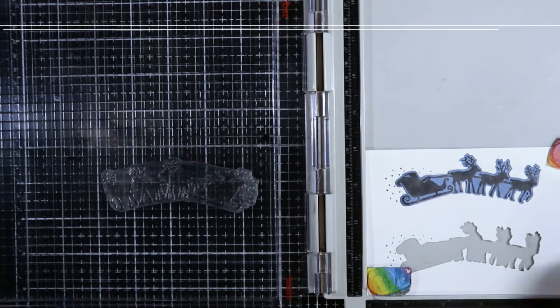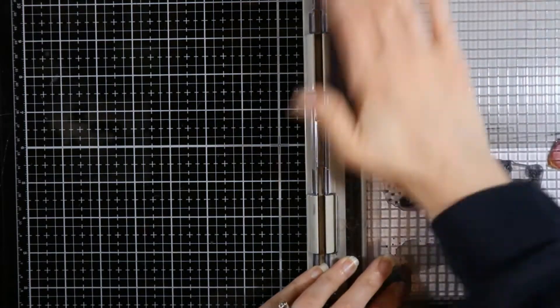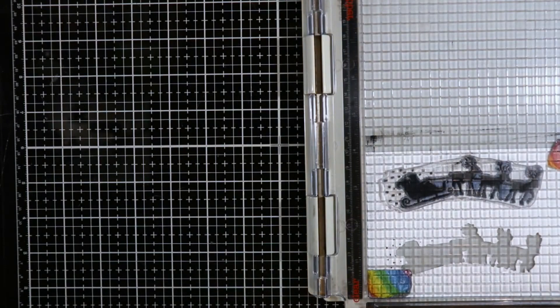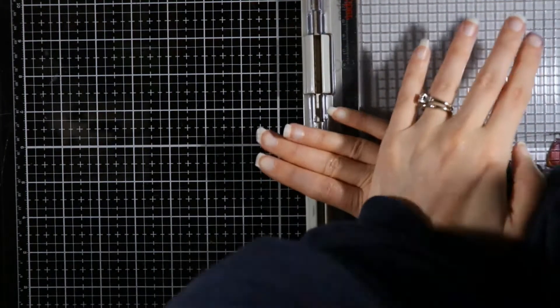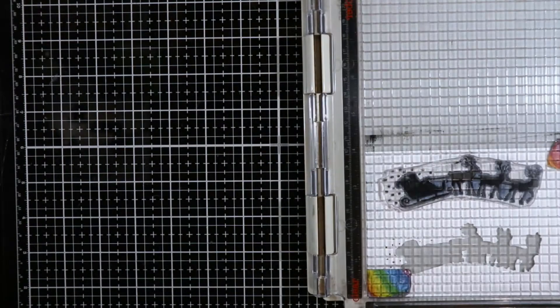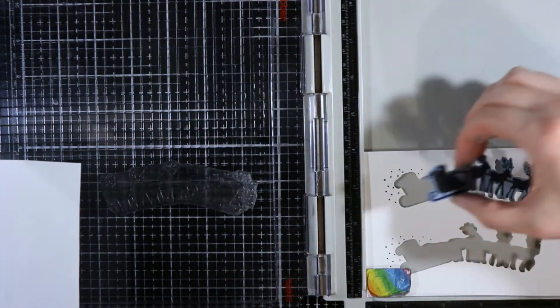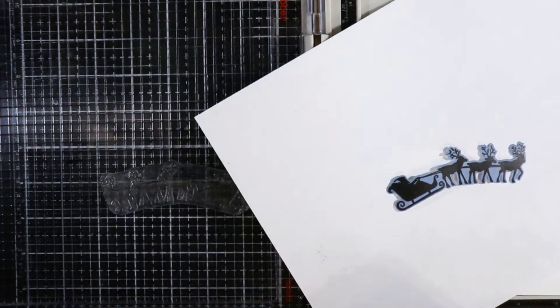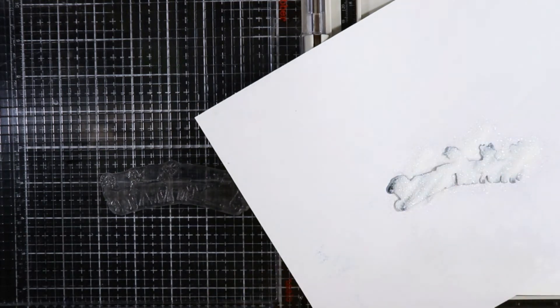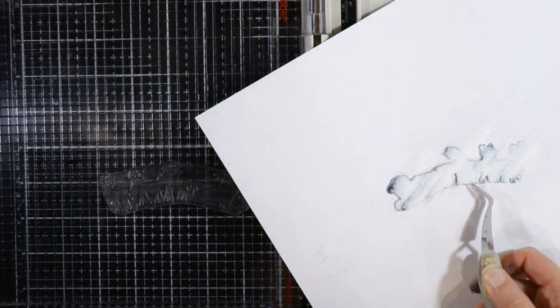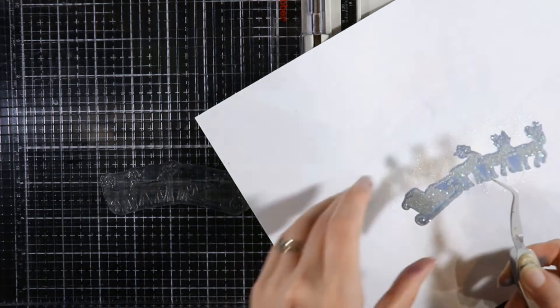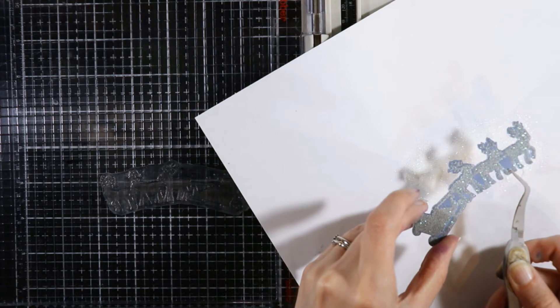Just going to pull that out and we're going to emboss the holographic embossing powder right over the top of that as well. I'm just going to get my tweezers out so I don't stick my fingers in that embossing powder and knock it off, and we're going to heat set that off screen.